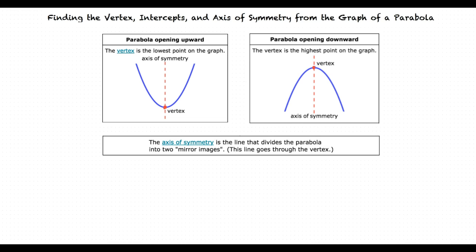Another important property of parabolas is the axis of symmetry. The axis of symmetry is the line that goes through the vertex and divides the parabola into two mirror images of itself.